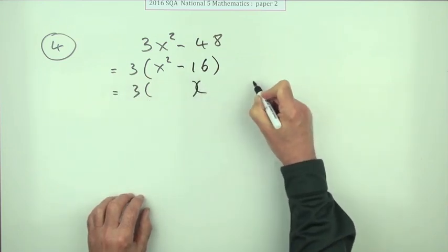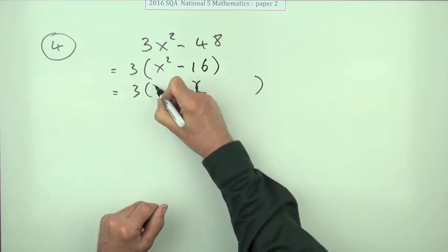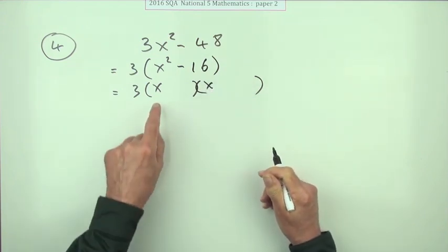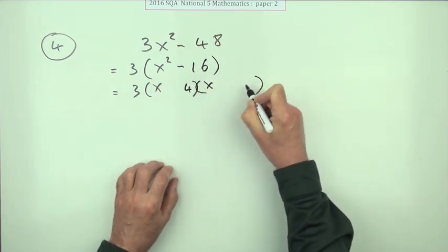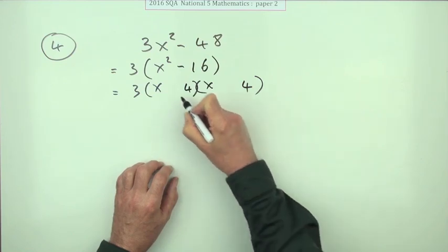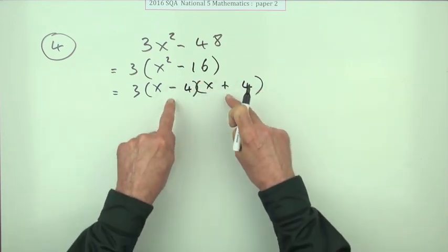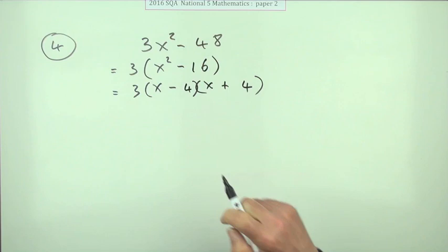Now you can put in those brackets you were desperate to put down all along. It must be x times x for x-squared, and it must be 4 times 4 for 16. So that'll be minus the 4 plus the 4, or put the signs whichever way you like.